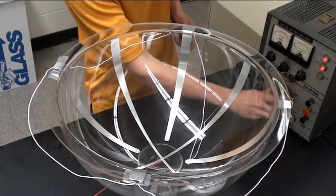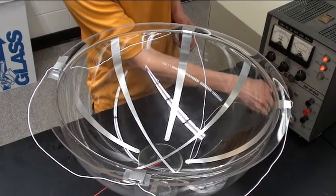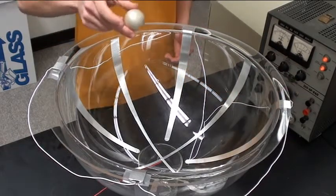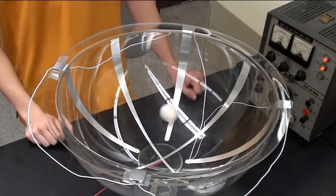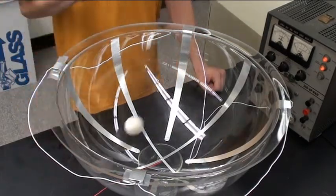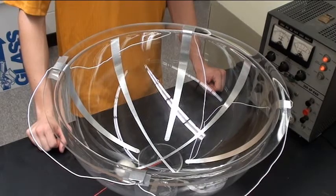Initially, I raise the voltage to about 16,000 volts, and then I take the ping pong ball and I usually toss it in. After a couple of moments, it attains a nice circular motion, as you see here.